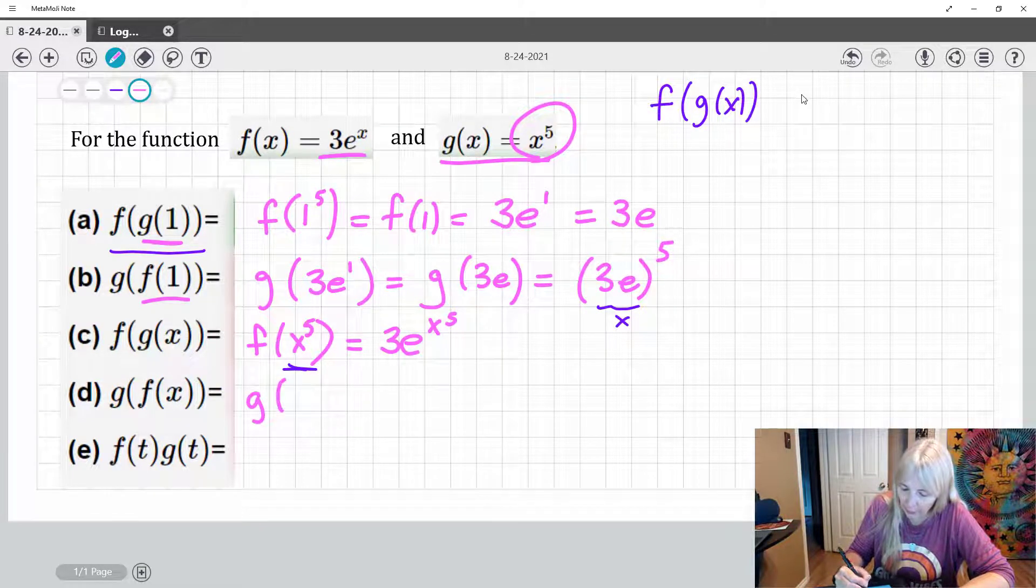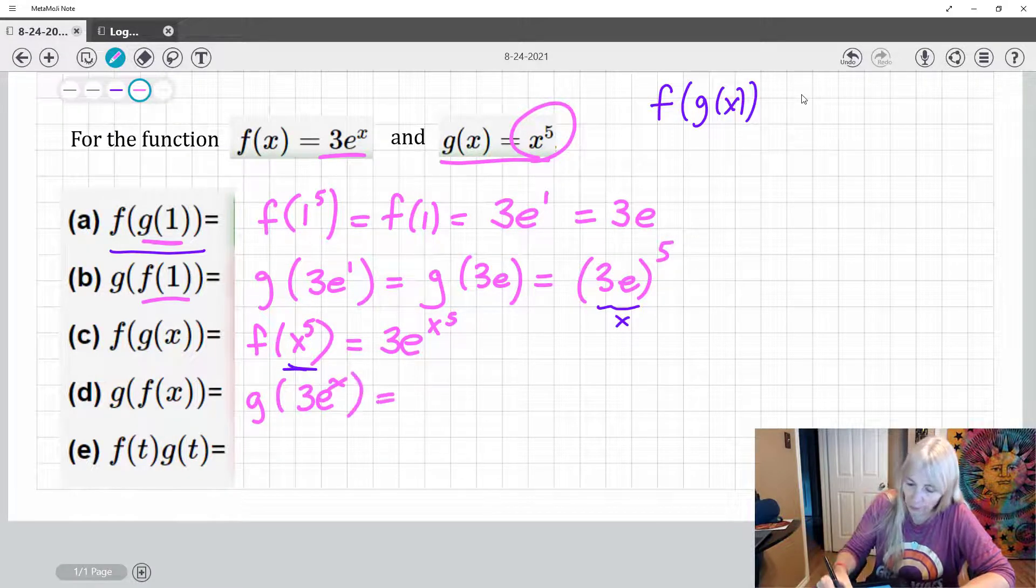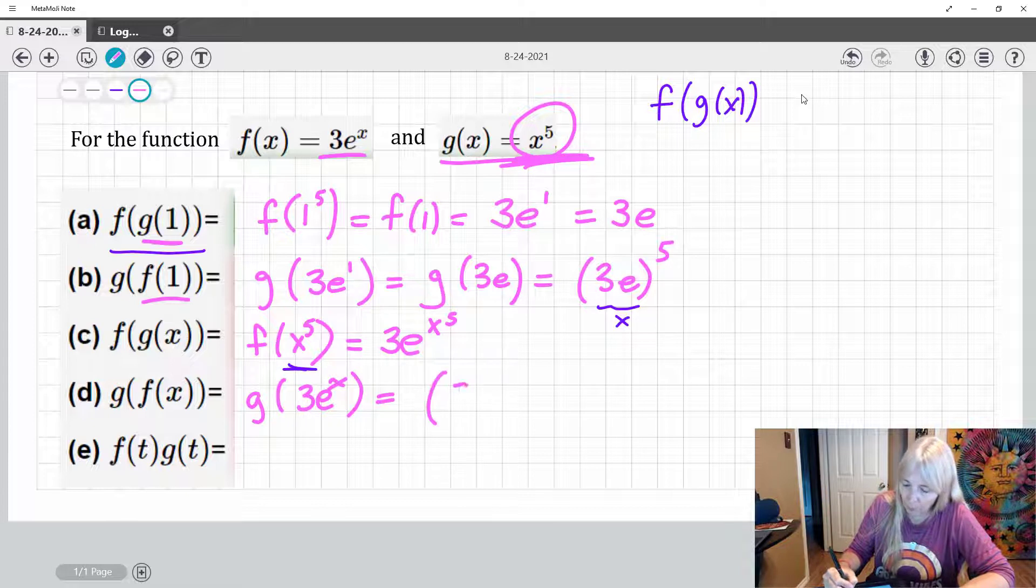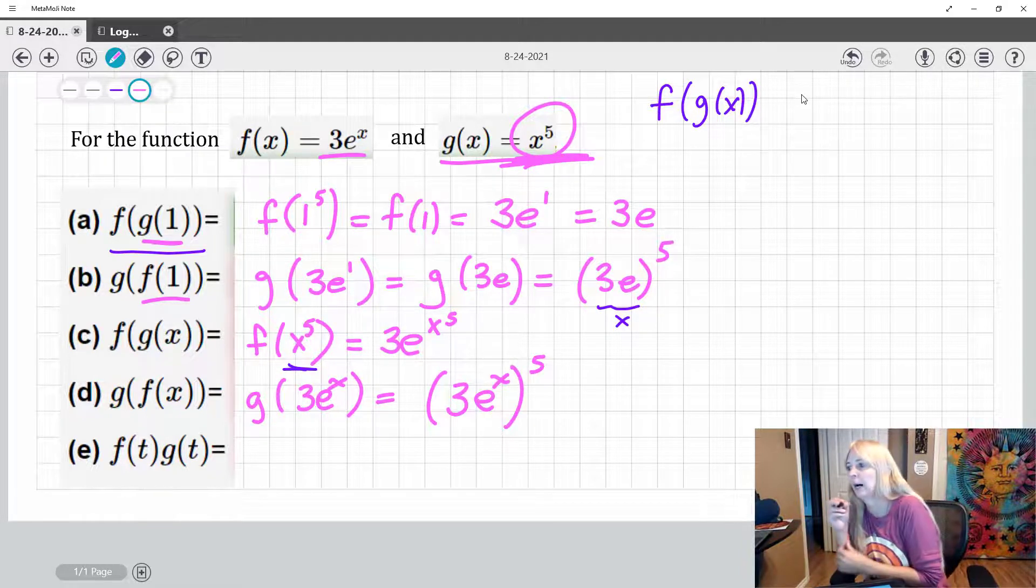So we have g of f of x, f of x is three e to the x. Where I see an x, I'm going to plug in three e to the x, and then I need my fifth power.